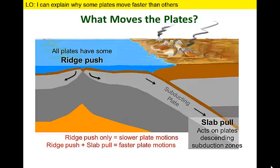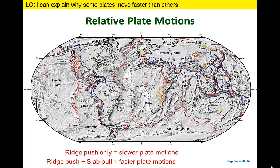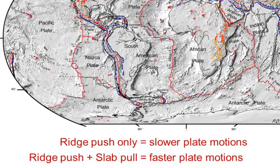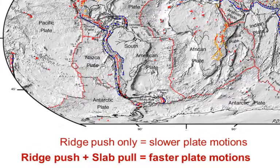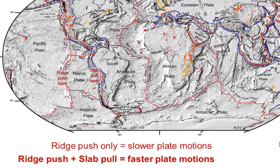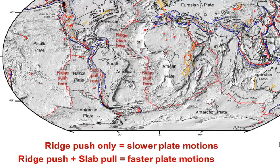Plates that are driven by ridge push alone tend to move slowly, while plates with a combination of ridge push and slab pull have faster rates of motion. Fast-moving plates like NASCA and the Pacific plate have these relatively rapid motions due to the combination of push forces from the ridge and pull forces along the opposing convergent boundaries. In contrast, slow-moving plates such as the North and South American plates only experience the push force from the oceanic ridge in the Atlantic Ocean. Both plates have active margins associated with trenches, but they override these margins and are not attached to a down-going slab, so they don't have the benefit of slab pull.